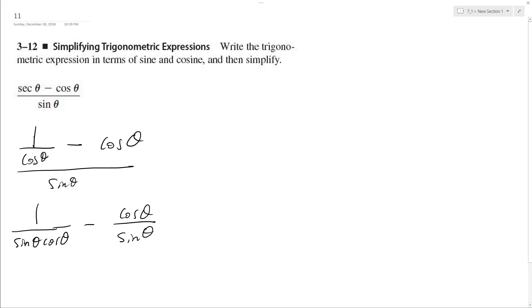So if I get a common denominator, sine theta, cosine theta, I end up with cosine theta minus cosine theta over sine theta. That's not right. Sorry, this should be...